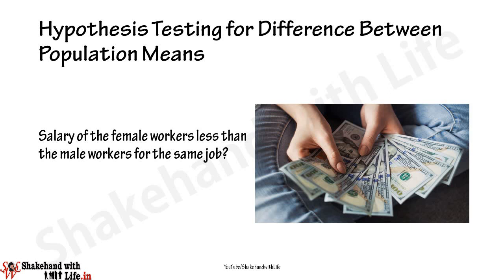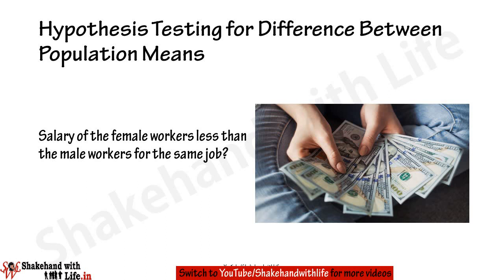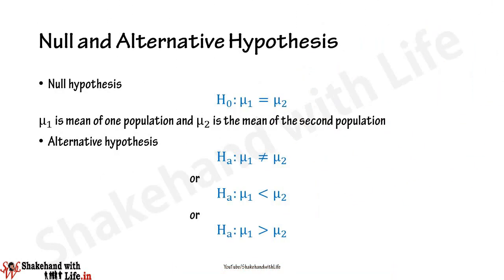In many decision situations we want to know whether the means of two populations are same or different. For example, whether the female workers are earning less than the male workers for the same job. In such type of decision situations, hypothesis testing for difference between means is used, and the null hypothesis in this case is stated as H₀ such that μ₁ = μ₂.